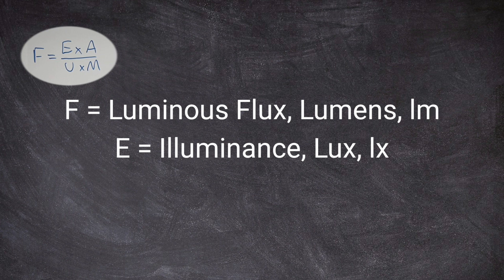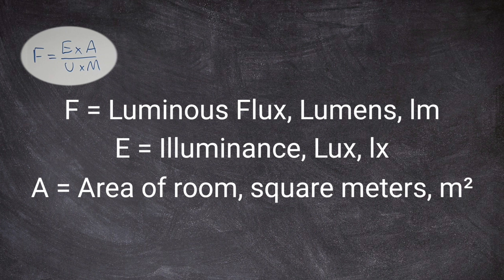Now moving on we've got our capital A. That is the area of a space in this case it's the area of a room, of course measured in square meters and we give it the unit symbol m to the power of 2, m squared.